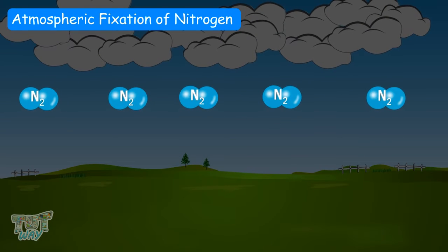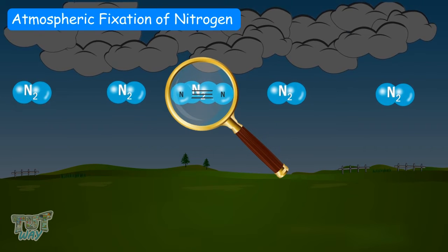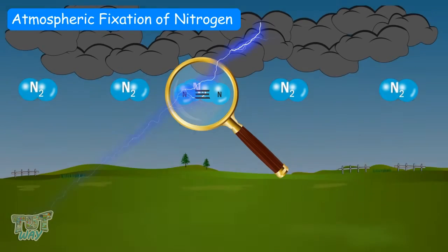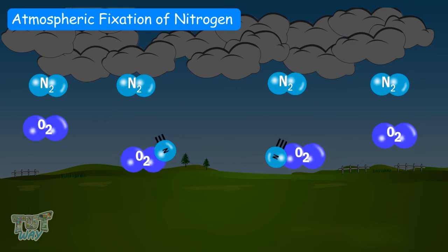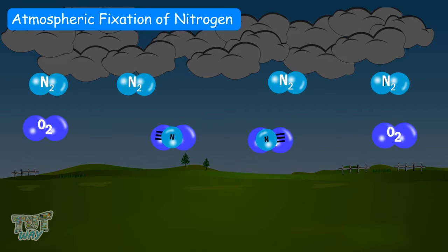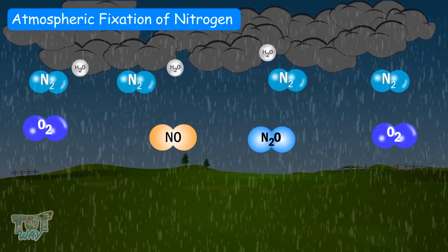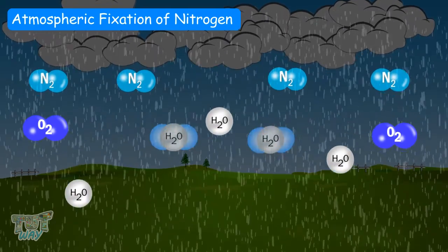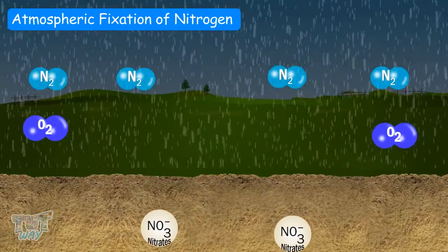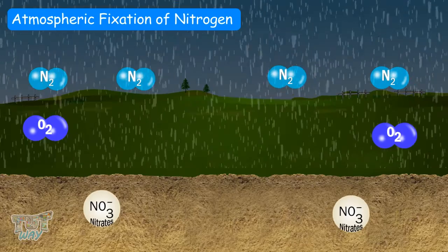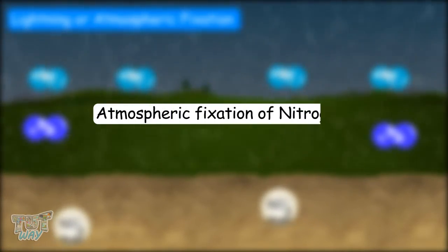Now let's learn another way of nitrogen fixation: lightning, or atmospheric fixation. The strong bond in atmospheric nitrogen can also be broken with the help of lightning, and free nitrogen atoms combine with oxygen in the air to form nitrogen oxide. These nitrogen oxides may further dissolve in rain to form nitrate, which is carried to the earth. This is called atmospheric fixation of nitrogen.